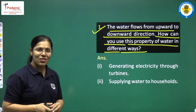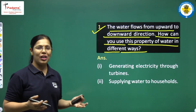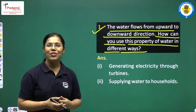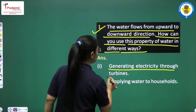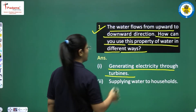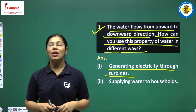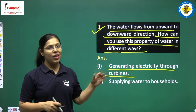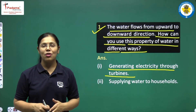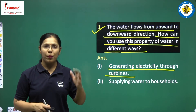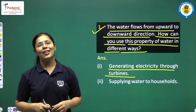We can answer this question: this property of water is being used in different ways, like generating electricity through turbines. The first example of using this property of water is generating electricity with the help of turbines. In that case also, this property of the downward fall of water is used.